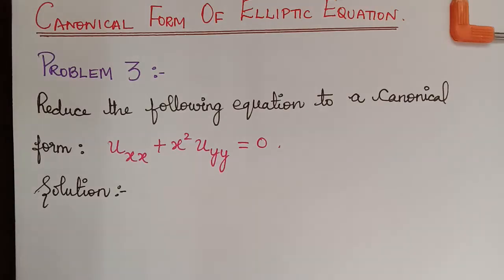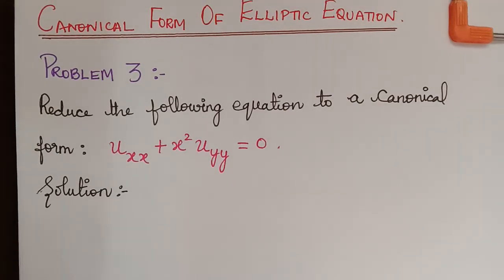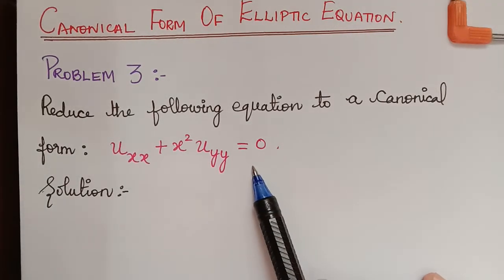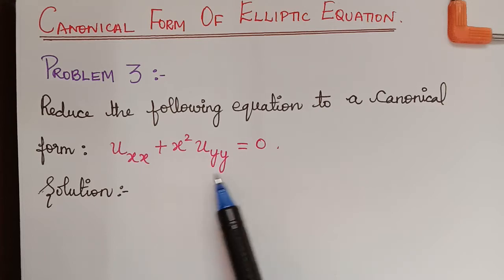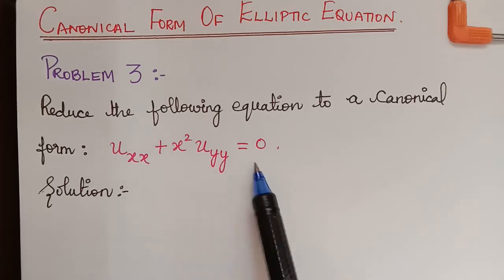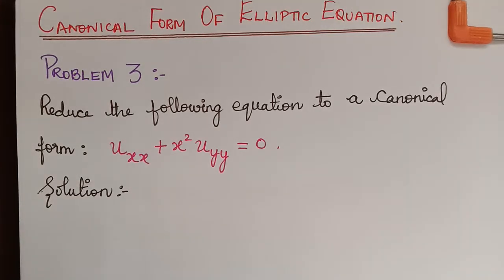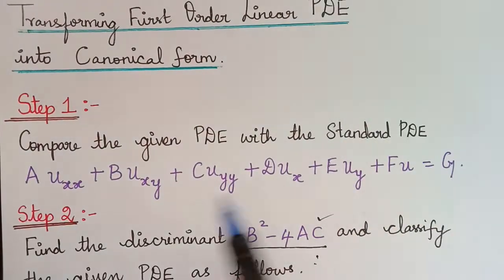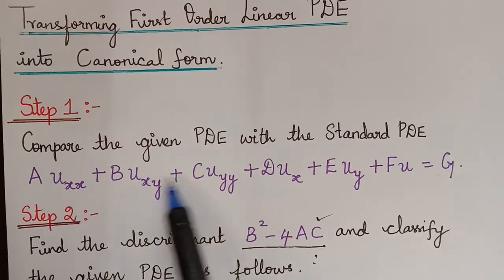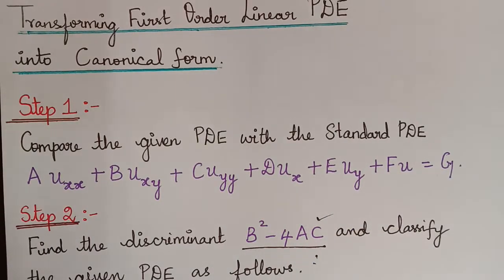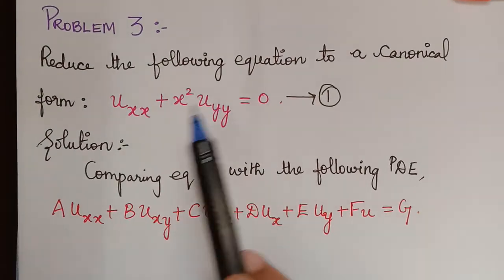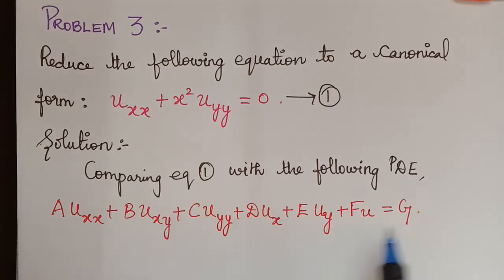In our previous lectures, we learnt about hyperbolic and parabolic equations. Now we are going to learn about the elliptic type of equation. But first, how to identify the type of a given equation is what we are going to see. We have to compare the given partial differential equation with the standard PDE to find the values of A, B, C, D, E, F, and G. I have marked the given PDE as equation 1 and we are comparing this with the standard PDE.